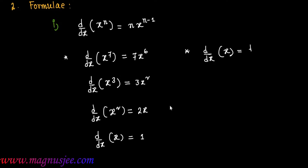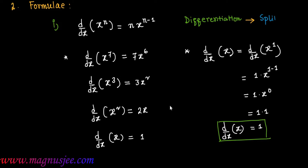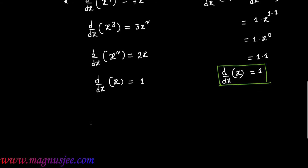We can show why d/dx of x equals 1. d/dx of x can be written as d/dx of x^1, which becomes 1·x^(1−1) = 1·x^0 = 1·1 = 1. So d/dx of x equals 1, or unity. Differentiation means splitting — that is why the power of x decreases due to the operation of d/dx over x^n.